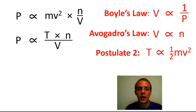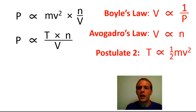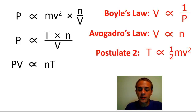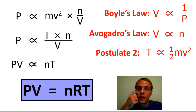Substituting mv² with T gives us the proportionality: pressure is proportional to T × N / V. Multiplying both sides by V gives PV ∝ nT. Finally, incorporating the proportionality constant known as the ideal gas constant R, we get our final result: PV = nRT.